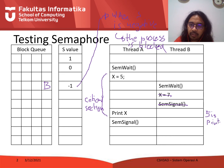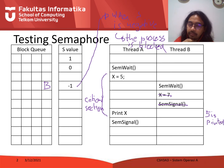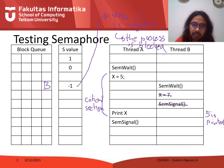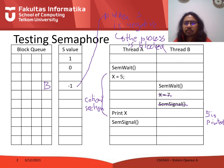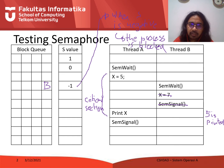Thread A executes print x, which means that 5 is printed — which is correct. If you remember in video 3, in the race condition, when print x was executed it printed 7 because of the race condition. When print x is finished, thread A leaves the critical section and calls send signal.